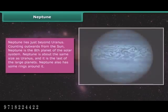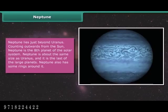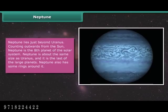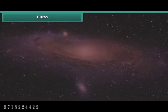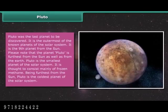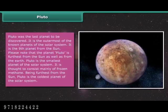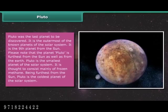Neptune lies just beyond Uranus and is the eighth planet of the solar system. It is about the same size as Uranus and is the last of the large planets, also having some rings around it. Pluto was the last planet to be discovered and is the outermost known planet, the ninth from the Sun. Pluto is the smallest planet of the solar system and is thought to consist mainly of frozen methane. Being farthest from the Sun, Pluto is the coldest planet.